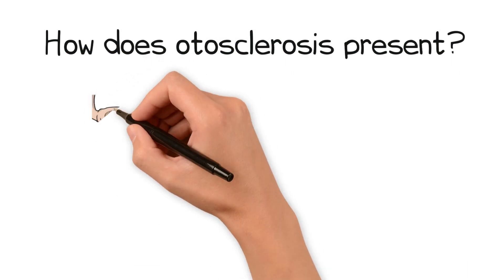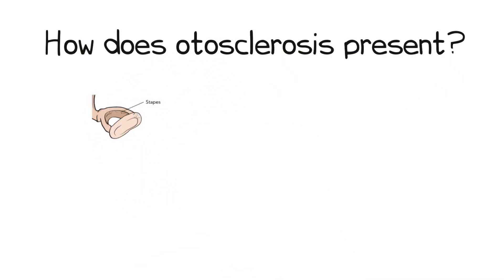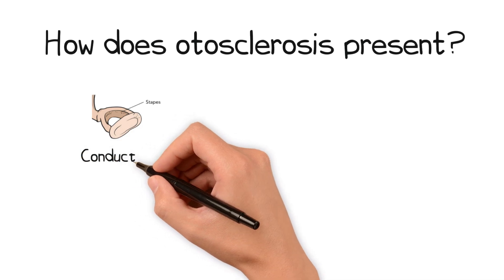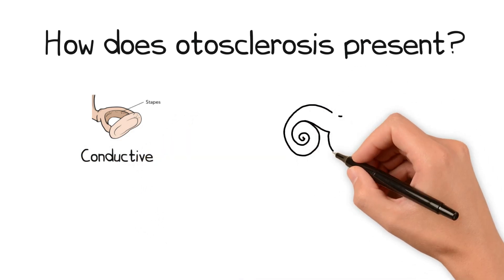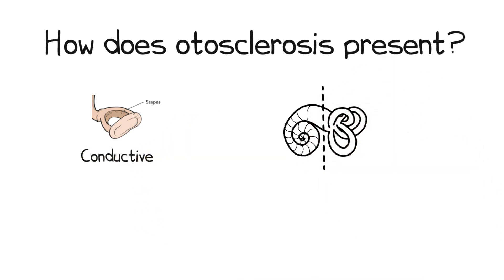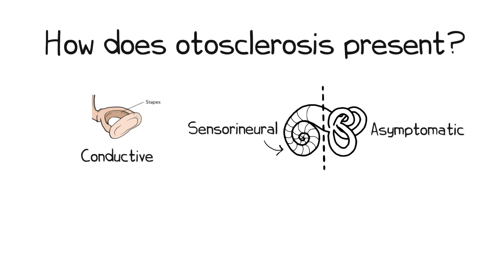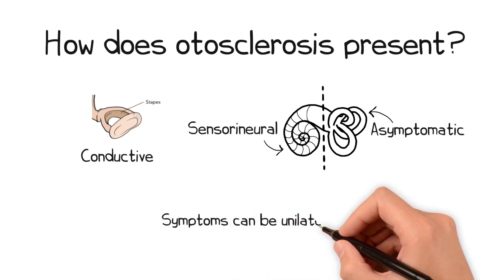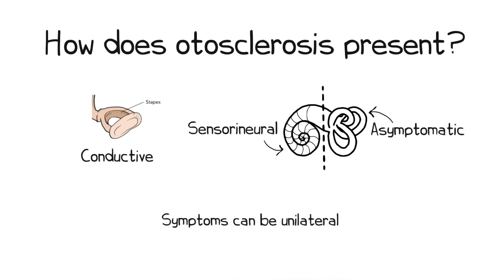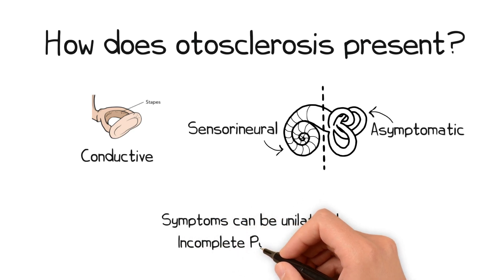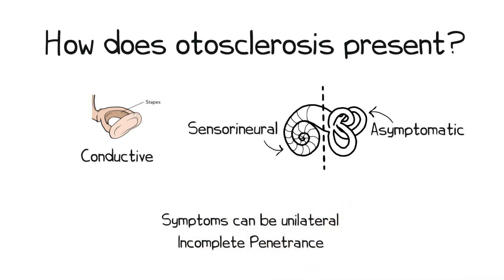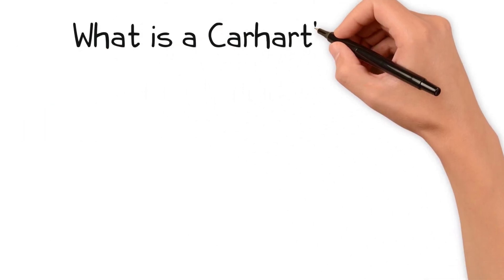Depending on where the foci are found within the otic capsule, the disease may either cause a conductive hearing loss if it fixes the stapes footplate, a sensorineural hearing loss if it affects the inner ear, or it may be asymptomatic if the foci are not affecting any parts of the otic capsule responsible for hearing. This is why we often see patients with hearing loss on one side but completely normal hearing on the other side, and also why otosclerosis, although autosomal dominant, has an incomplete penetrance with variable expression.